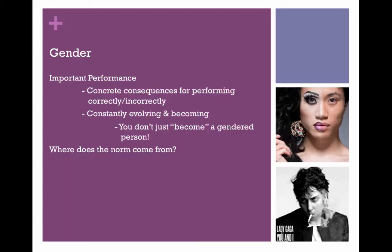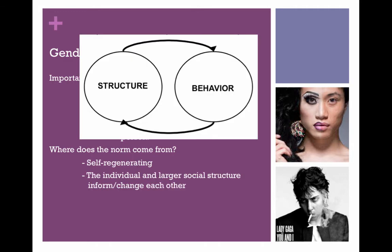So gender may be performative, but it's a really important performance. There are concrete consequences for performing properly or performing wrong. Gender as a performative means that it's constantly evolving and becoming — you don't just become a man or a woman, but you're constantly becoming one. So where does this norm come from? Individuals perform gender based on social norms, but those social norms require people to abide by them. Just like all social reality, the norm is self-regenerating: the individual impacts the structure, which impacts the individual.